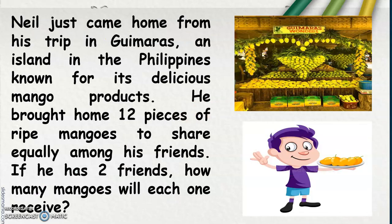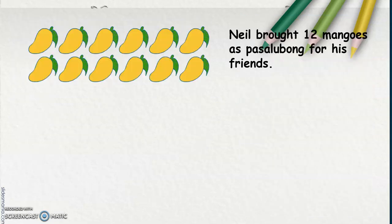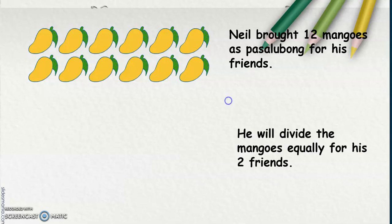Neil just came home from his trip in Guimaras, an island in the Philippines known for its delicious mango products. He brought home 12 pieces of ripe mangoes to share equally among his friends. If he has 2 friends, how many mangoes will each one receive? Neil brought 12 mangoes as pasalubong for his friends. He will divide the mangoes equally for his 2 friends.